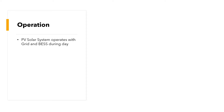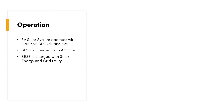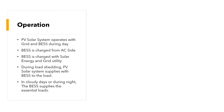Operation of the AC coupled PV solar system: the PV solar system operates with a grid and battery energy storage system during the day. The battery energy storage system is charged from the AC side, with solar energy and grid utility. During load shedding, the PV solar system supplies the load together with the battery. On cloudy days or during the night, the battery supplies the essential load.